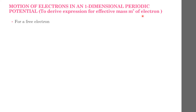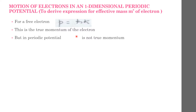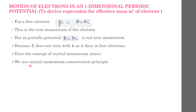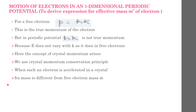For a free electron, the momentum p is given as ℏk — this is the true momentum of the electron. But in a periodic potential, ℏk is not the true momentum because E does not vary with k as it does for free electrons. Here the concept of crystal momentum arises. When such an electron is accelerated in a crystal, its mass is different from the free electron mass m, and is called the effective mass m star.